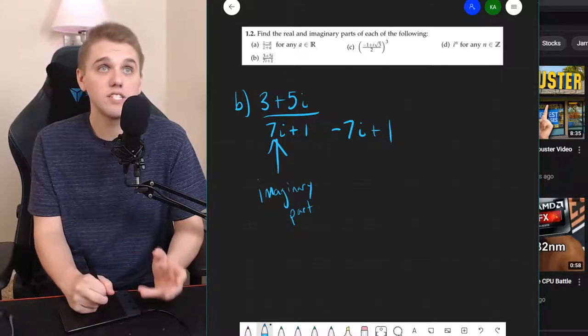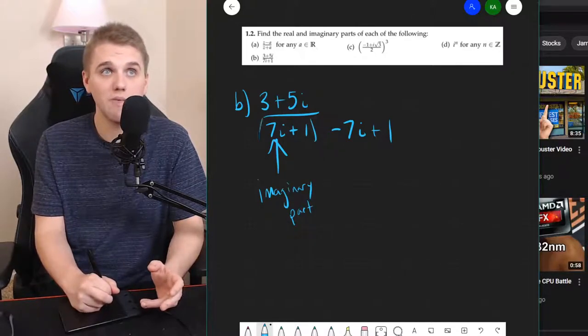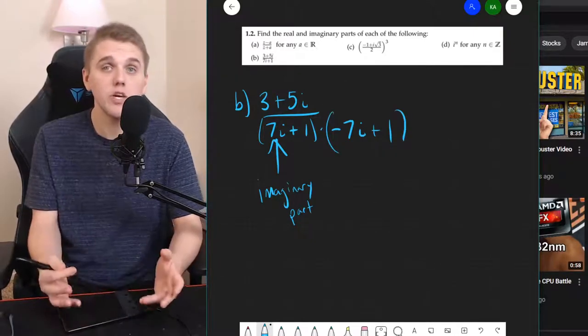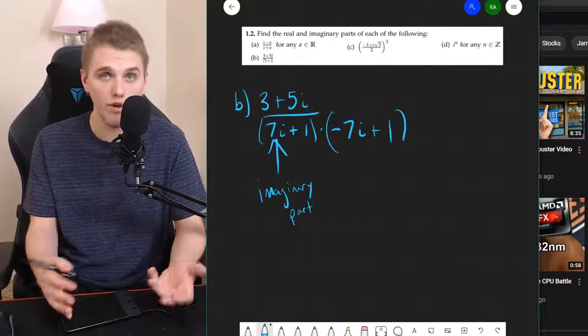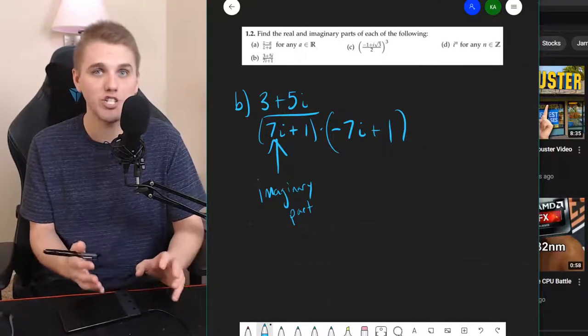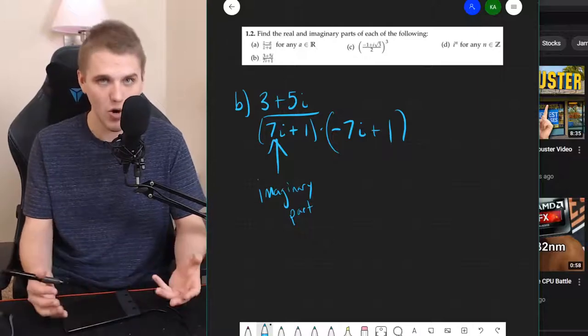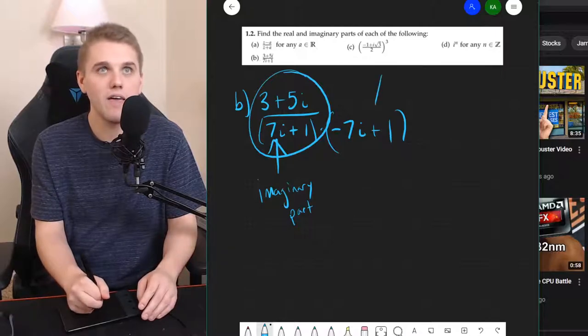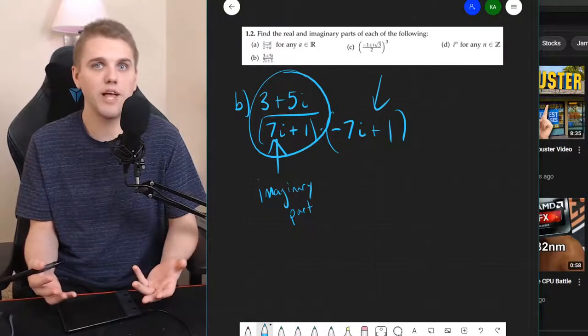And so I want to multiply 7i plus 1 times negative 7i plus 1. Because doing so is going to result in a real number. I know that for sure. And that will get rid of all of the imaginary parts in my denominator. That's the goal. But I can't just multiply this number by just some random complex number.